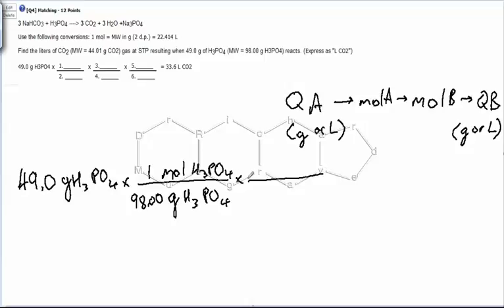Times, and then a line. We know that moles of H3PO4 goes on the bottom to cancel out with this one. And we're looking for moles of the thing that we're after, which is CO2, so moles of CO2 goes on top. The relationship between these two is that three moles of CO2 came from one mole of H3PO4.